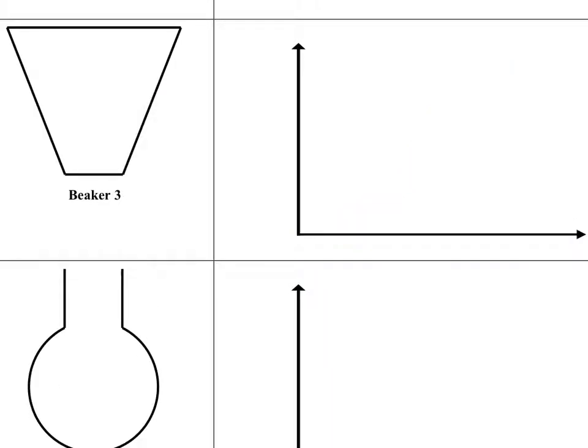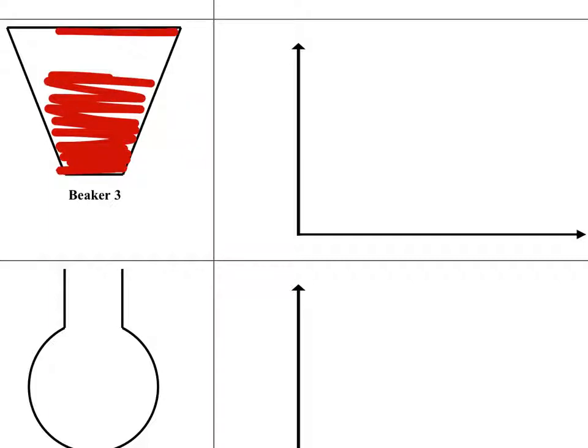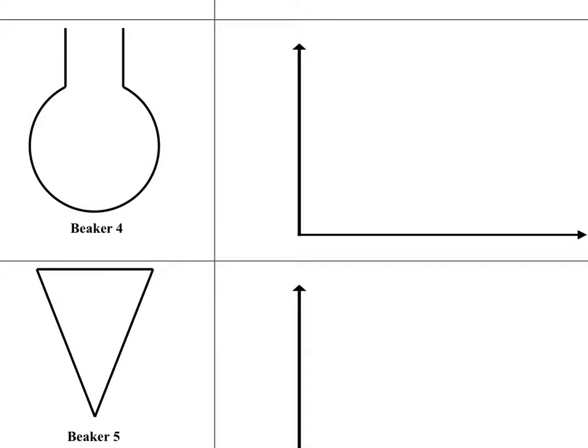What about this one? This one is getting wider as we go upwards. So as this thing fills, it's going to be filling slower, slower until it gets all the way to the top. So it's starting out faster and then it's getting slower like this.